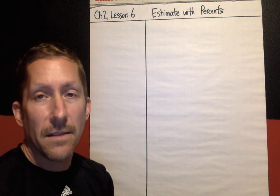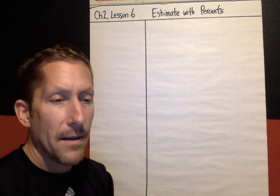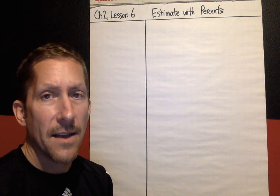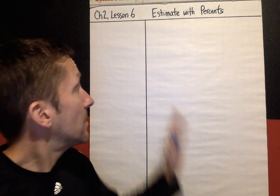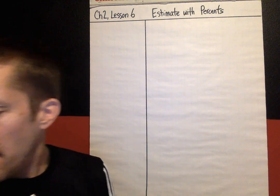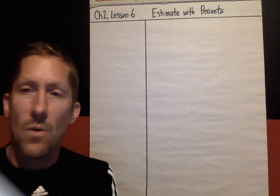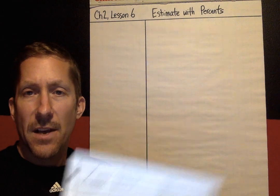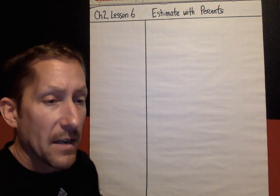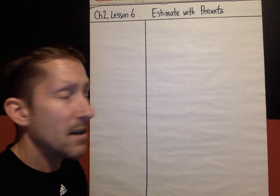What's up, kids? This is Chapter 2, Lesson 6. The topic of this lesson is Estimate with Percents, and as you can see, there's the Cornell Note format behind me, so you will need either your composition book or a note page, and you should be following along, copying the notes, pausing when you need to, backing up if necessary.